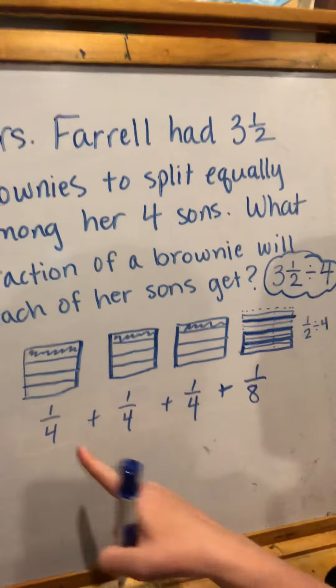So each boy is going to get one fourth of this whole brownie, one fourth of this whole brownie, one fourth of this whole brownie, and one eighth of this half brownie. When I add up one fourth plus one fourth plus one fourth, I know that equals three fourths. Now I have to add that to one eighth. We can't add our fractions unless we're dealing with a common denominator. I know that an equivalent fraction for three fourths is six eighths. I'm going to add it to the one eighth that I already had. And now I can see that seven eighths is my answer.